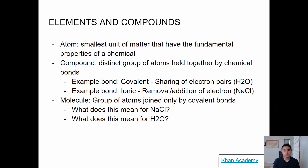An atom is the smallest unit of matter that has the fundamental properties of a chemical. A compound is distinct groups of atoms held together by chemical bonds. So think of it like a hydrogen atom — the smallest unit of matter — and you have two hydrogens and one oxygen held together by a covalent bond to get H2O, water.